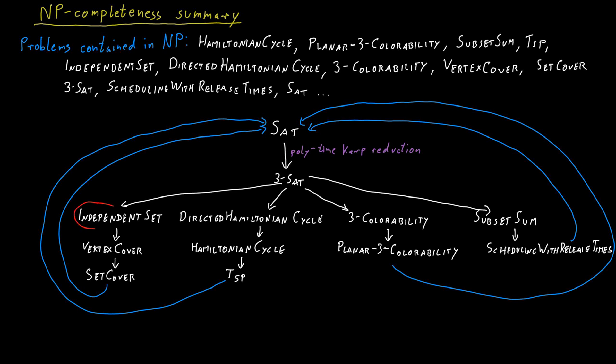So if we take any two problems, say independent set and scheduling with release times, then those two problems reduce to one another in polynomial time in the CARB sense. Because independent set reduces to vertex cover, which reduces to set cover,